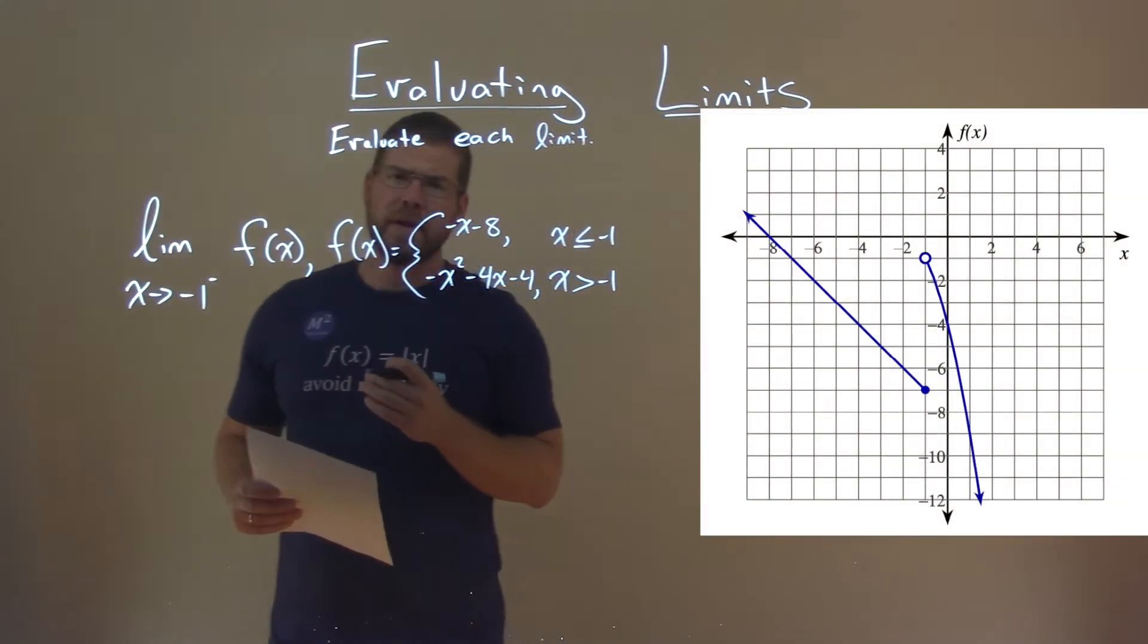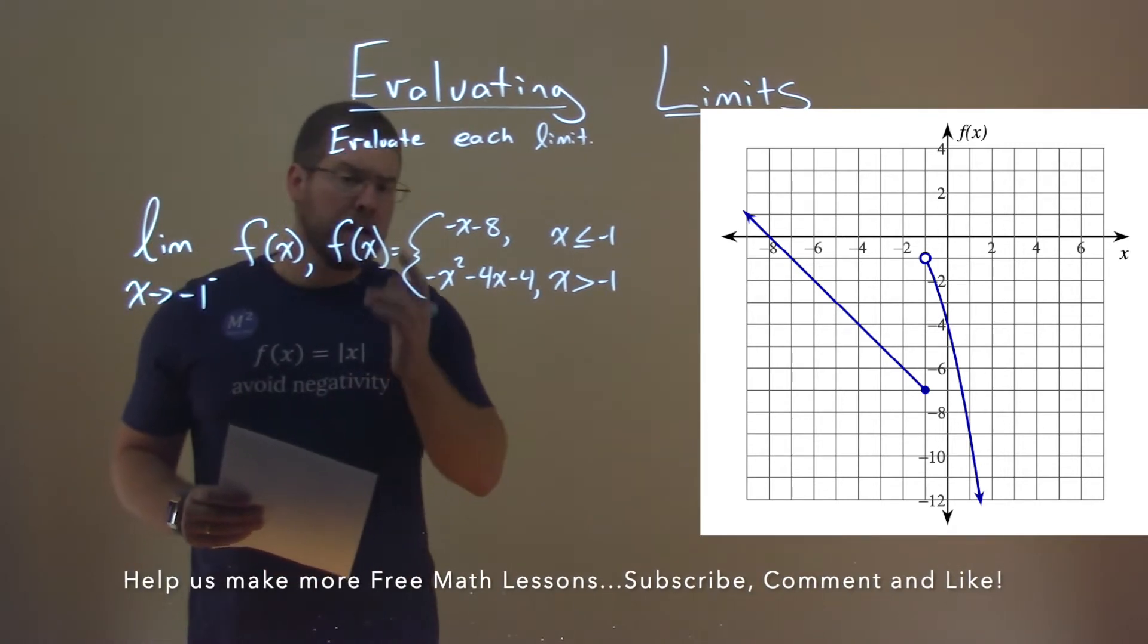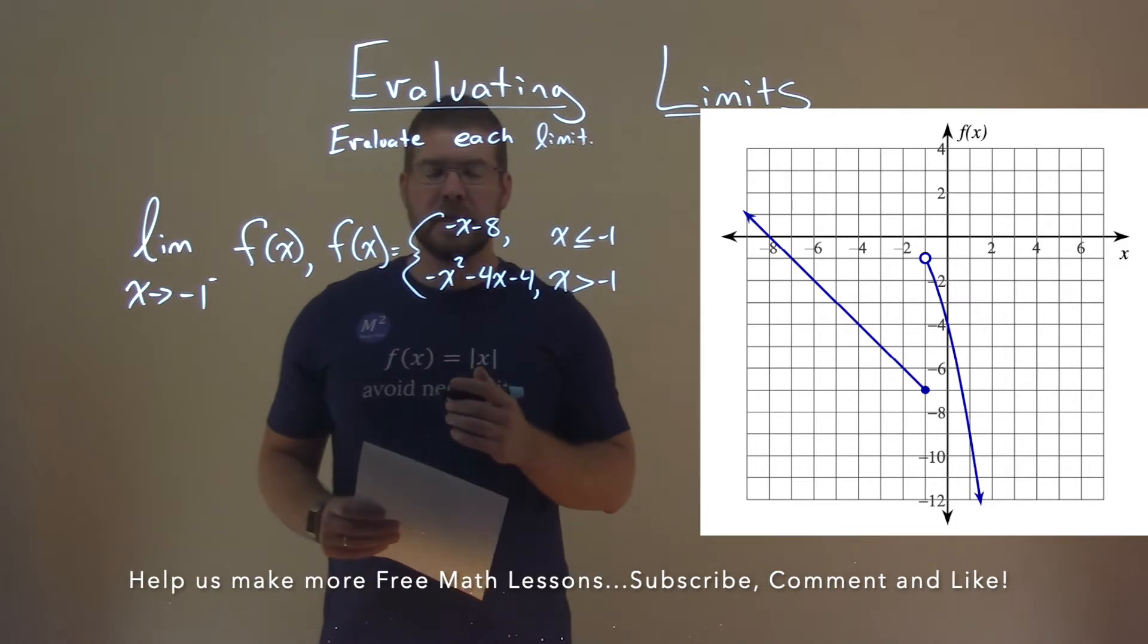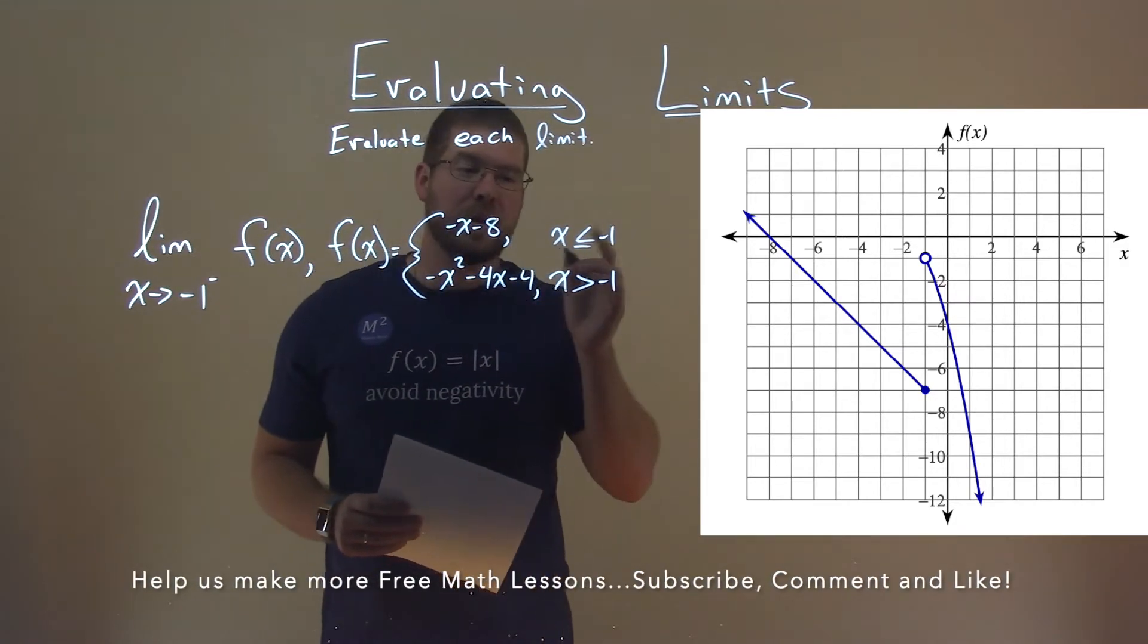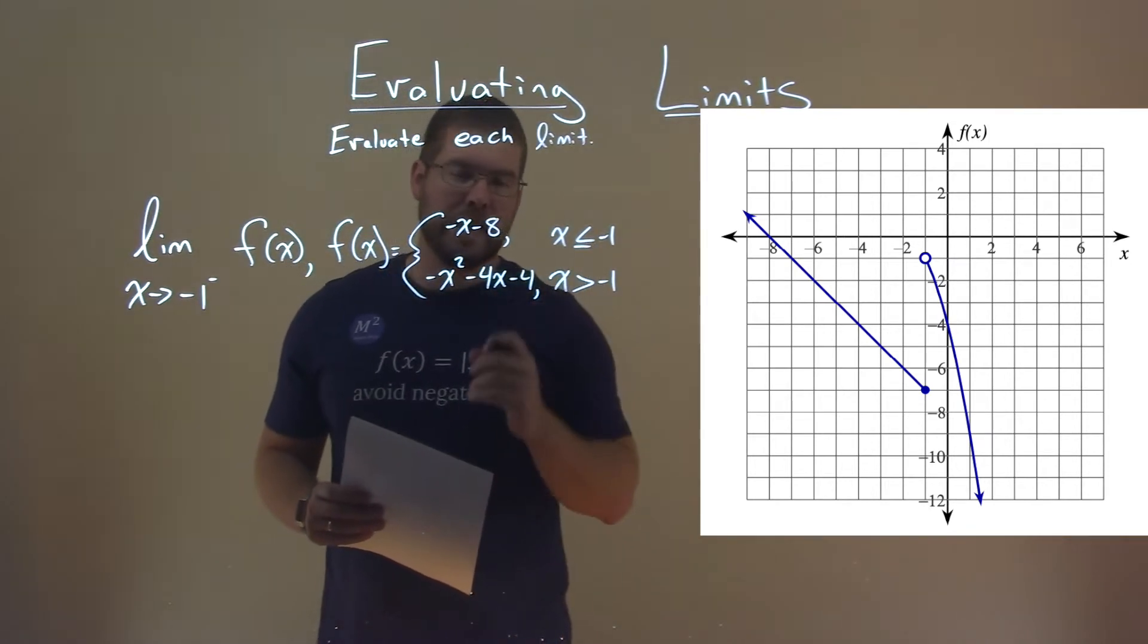We're given this problem right here. The limit as x approaches negative 1 from the left of f of x. And f of x is equal to the piecewise function: negative x minus 8, where x is less than or equal to negative 1, and negative x squared minus 4x minus 4, when x is greater than negative 1.